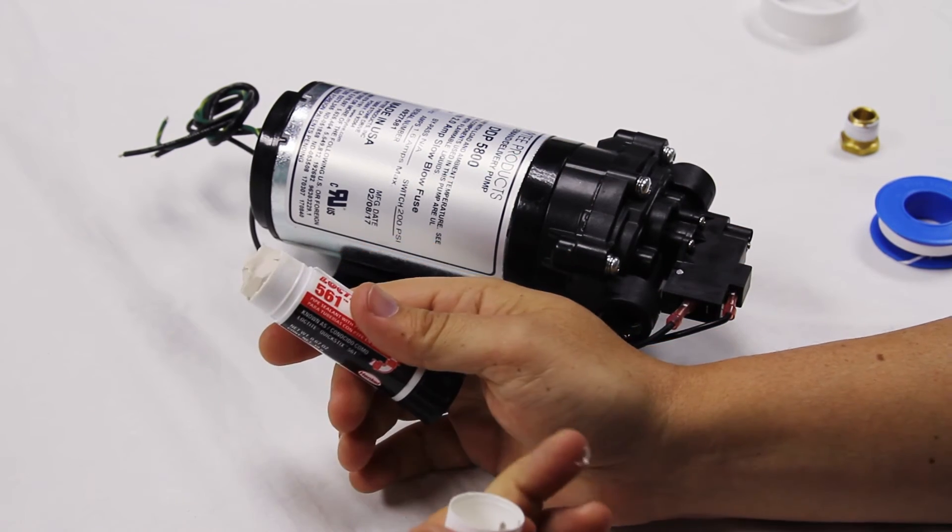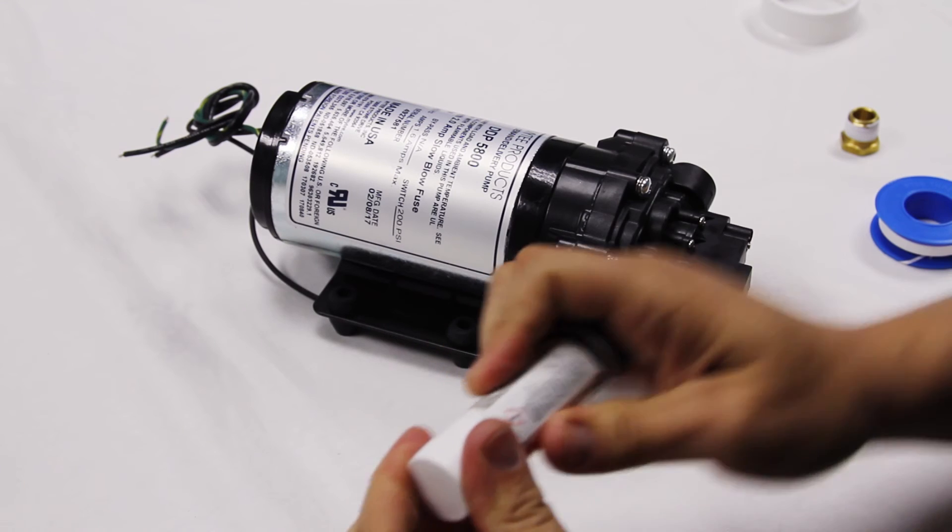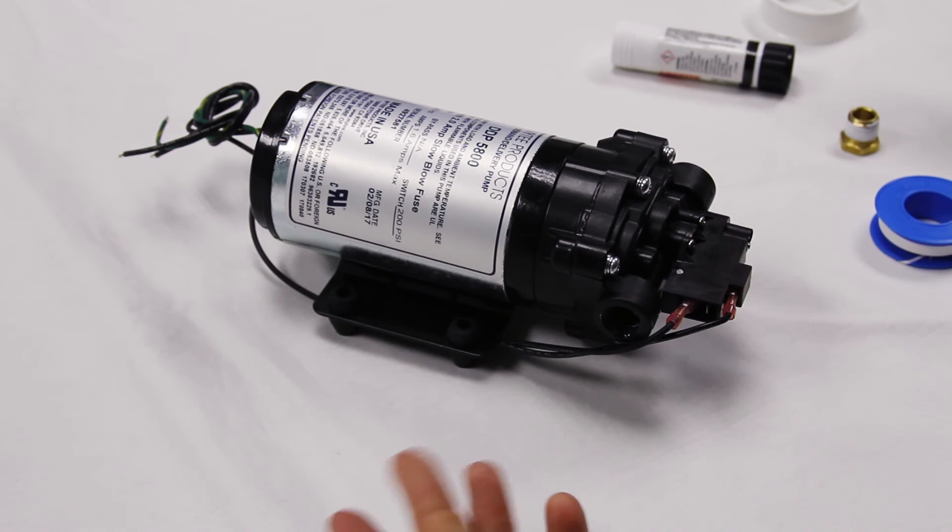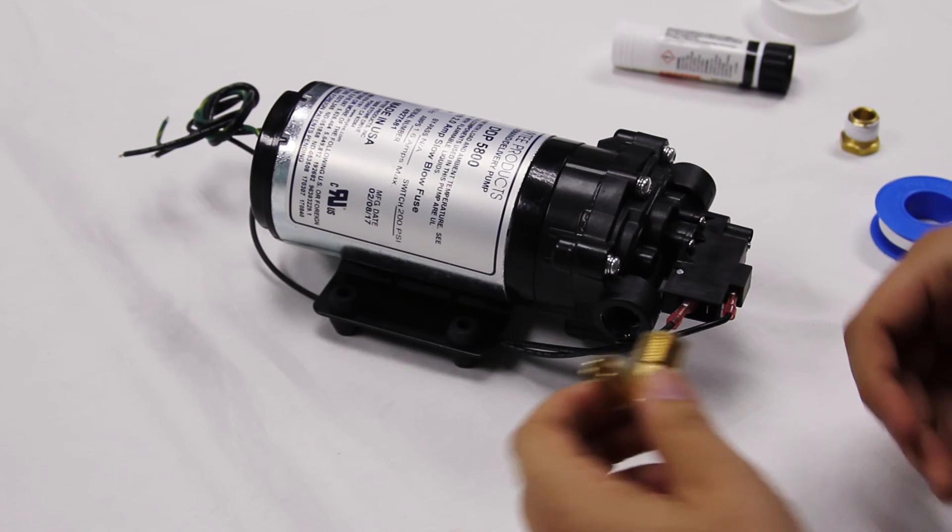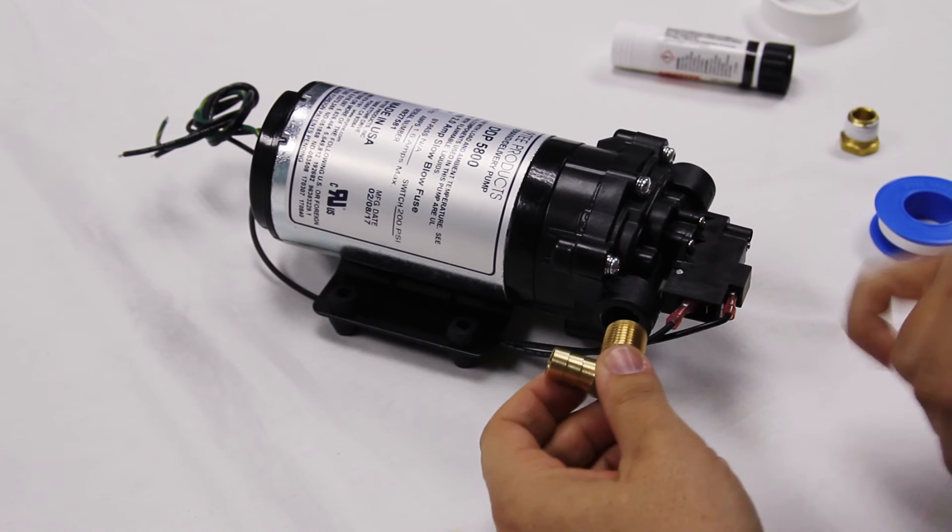Or you can use some sort of silicone caulking, anything like that for a good seal. Here's the important thing when you're putting on your brass: imagine we have our paste here, when we thread it on, thread it by hand.